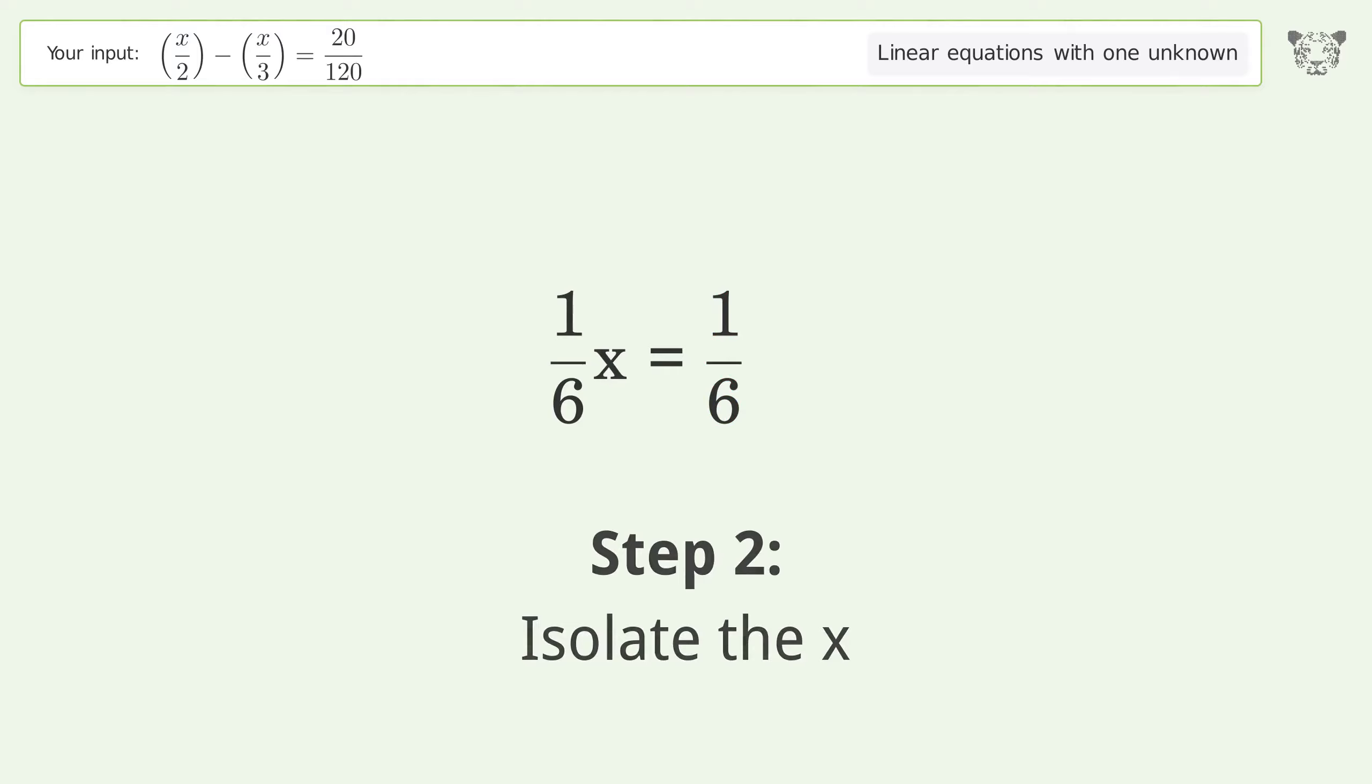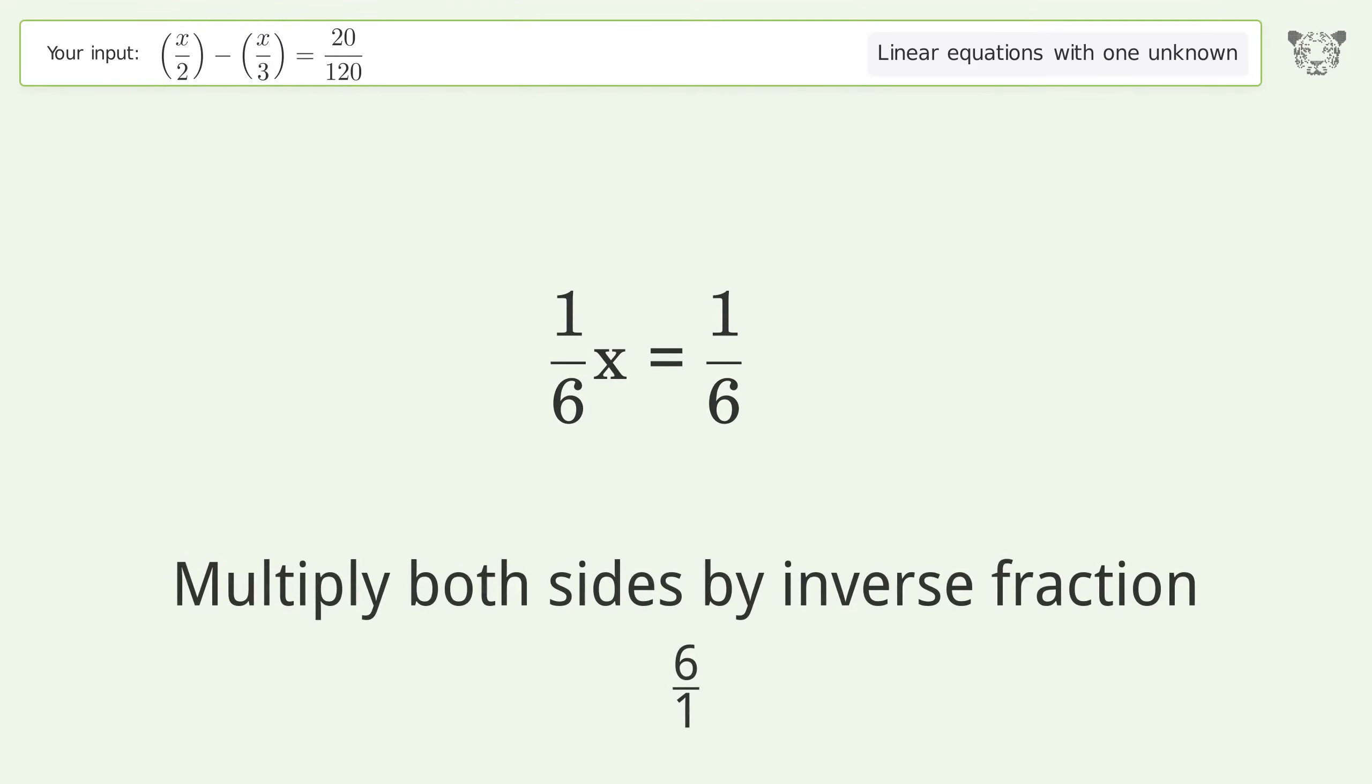Isolate the x. Multiply both sides by inverse fraction 6 over 1.